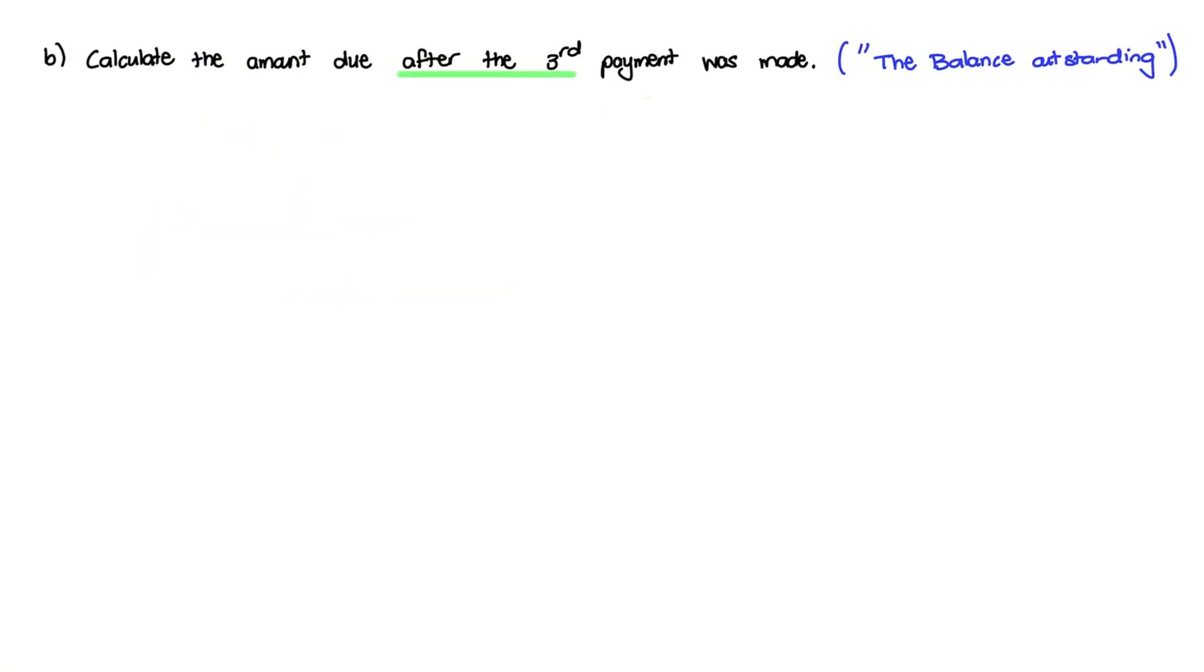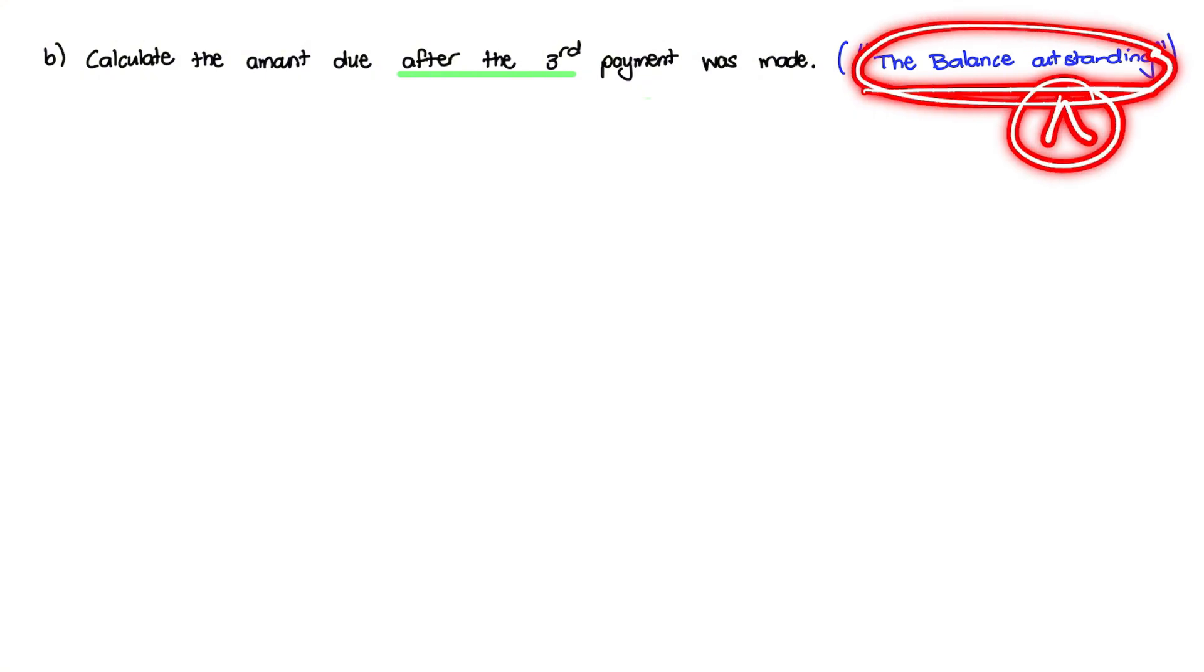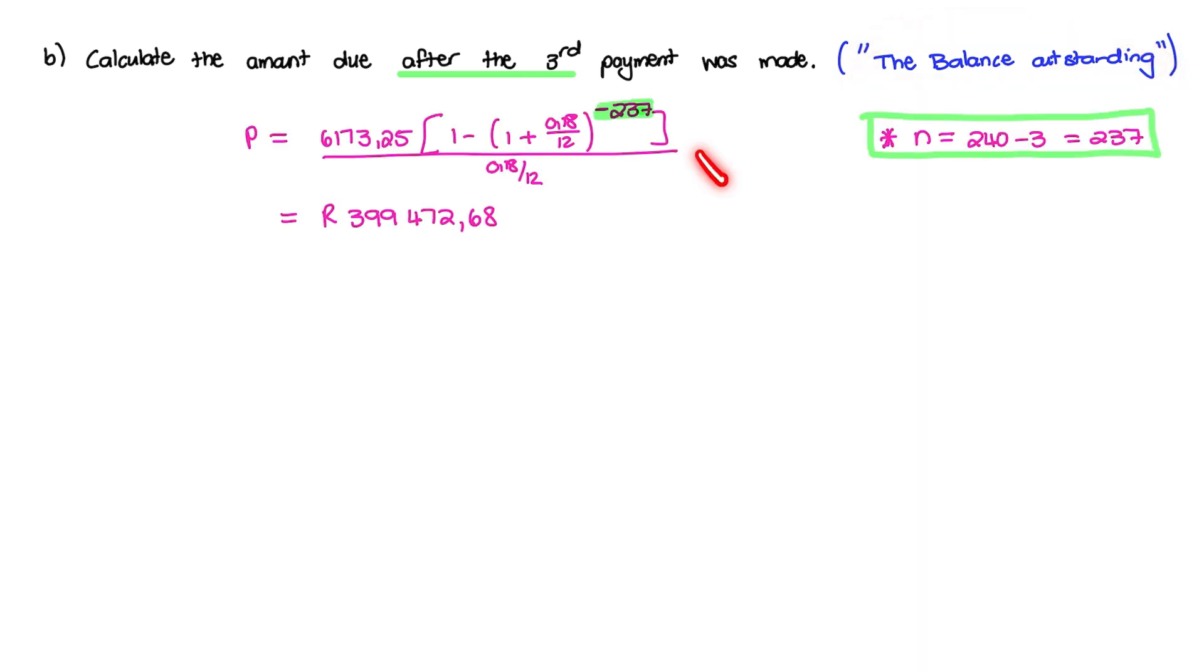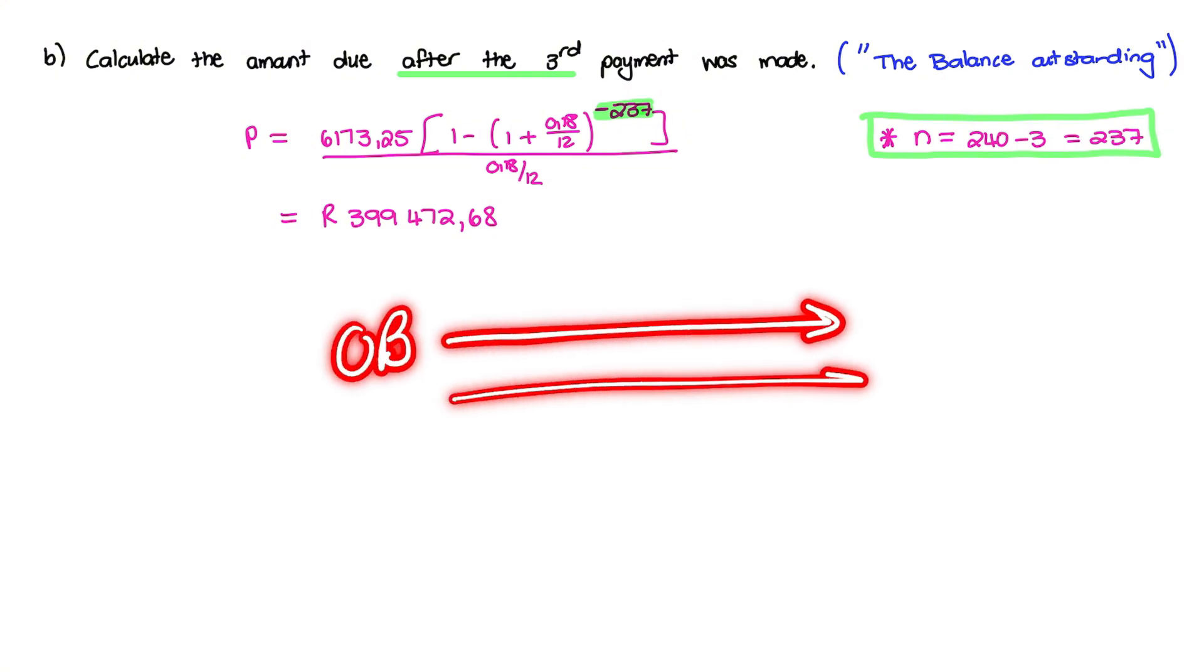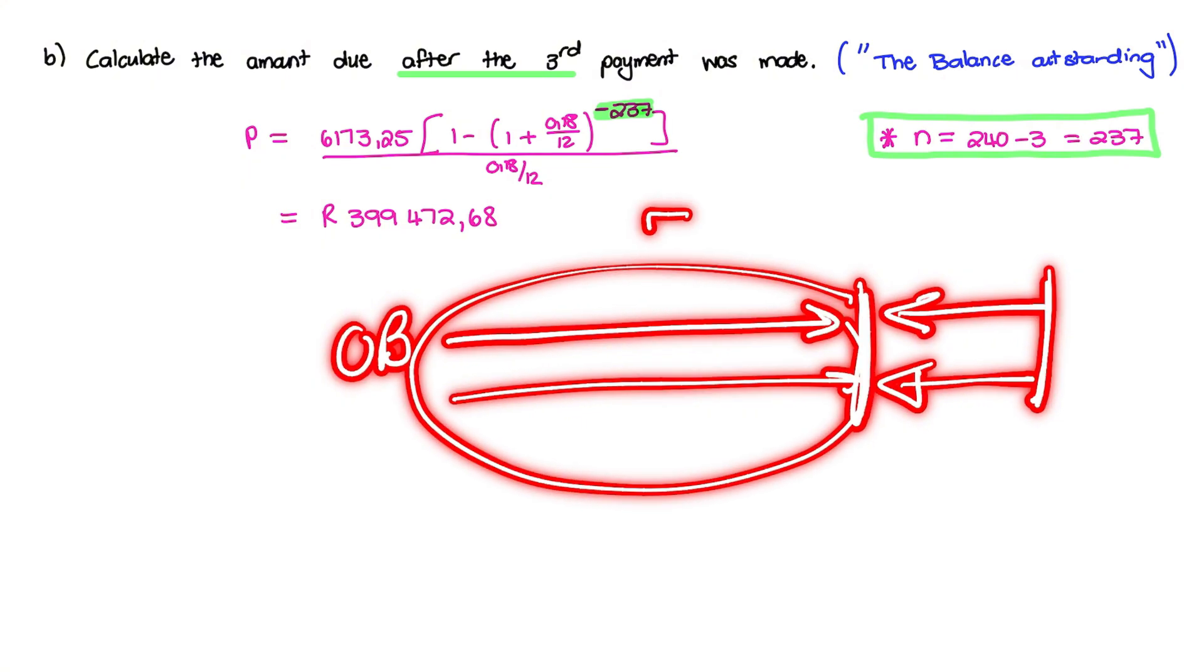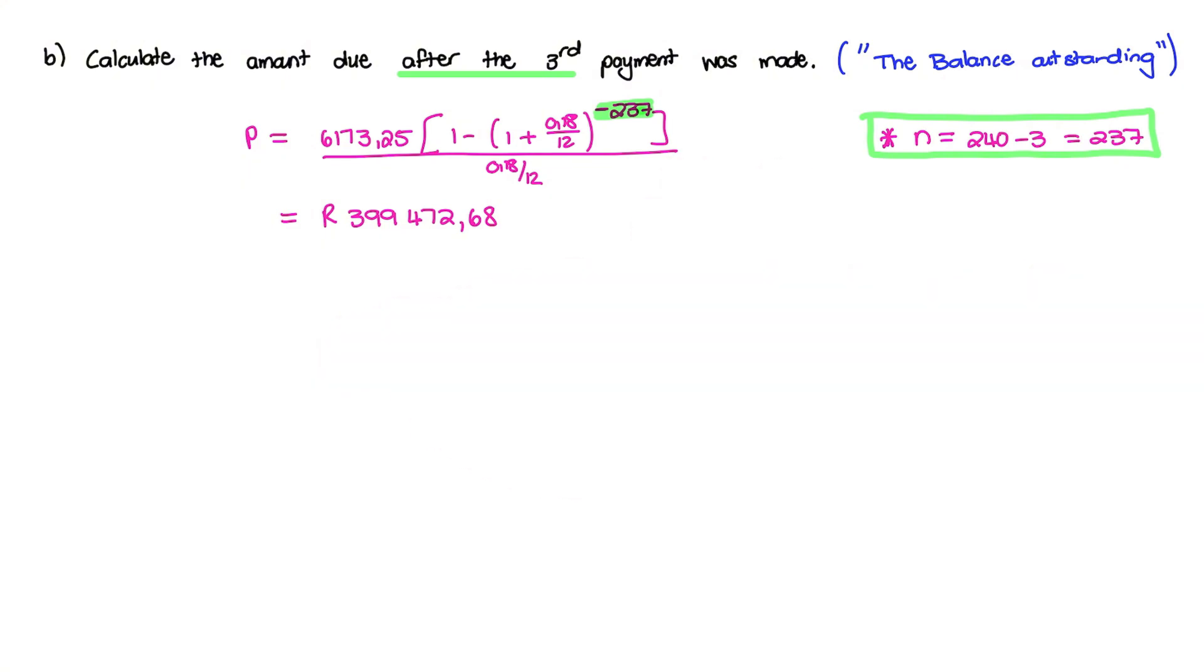The next question says, calculate the amount due after the third payment was made. So this is asking for the balance outstanding. And we have discussed the balance outstanding in a previous video. Now, just to save a little bit of time, in my previous video on the outstanding balance, I said we always take money forward to a certain point in time. And that sometimes teachers prefer to move backwards as well. So my preferred method is to take the money forward to a certain point in time.